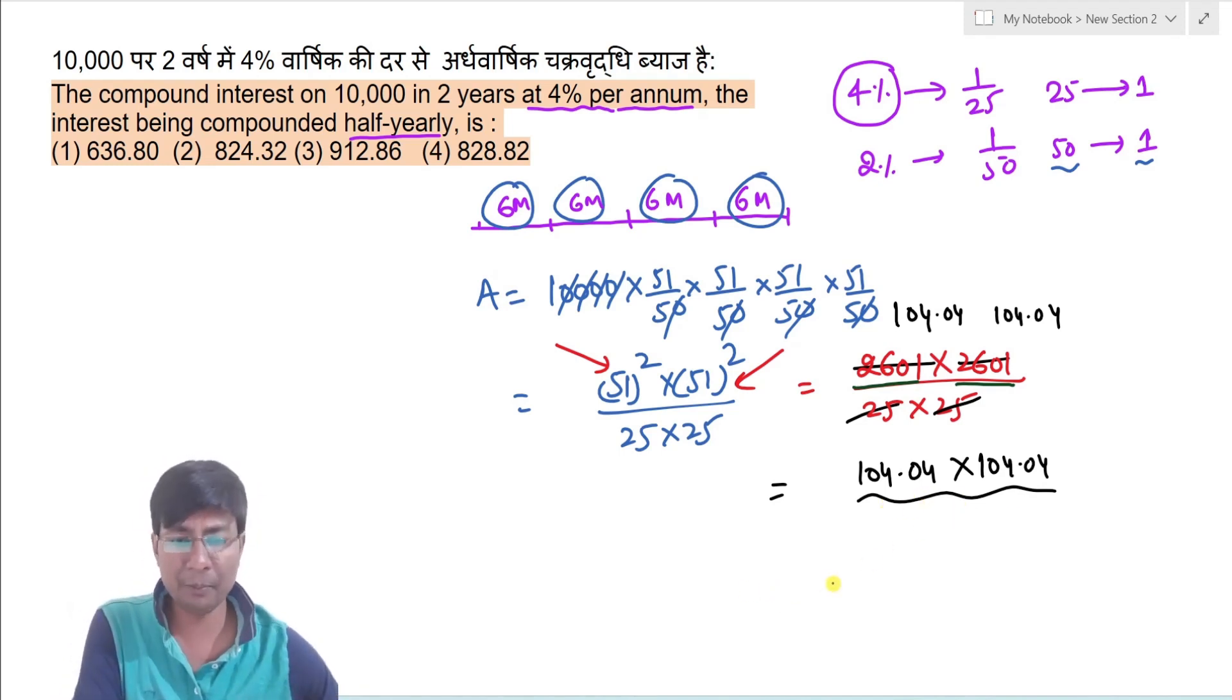Jab kabhi bhi is tarah ke number ka square karna hai, toh aap integral part ka square kar lo, integral matlab jo fraction me nahi hai. Toh yahan pe 104 ko square kar lo. Aur jo bhi fraction part tha, jaise yahan pe 04 hai, toh isko double kar do.